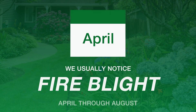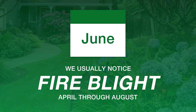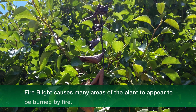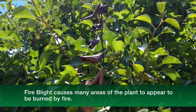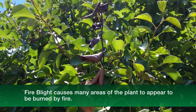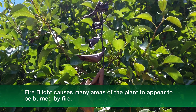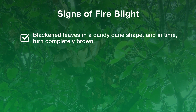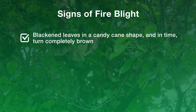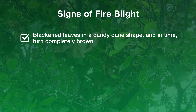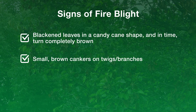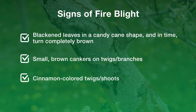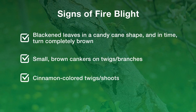We usually notice this disease in the spring and summer. The name is appropriate, as fire blight causes many areas of a plant to appear to be burned by fire. You might see blackened leaves that grow in a candy cane shape and, in time, turn completely brown, or small brown cankers on twigs and branches, or cinnamon-colored twigs and shoots.